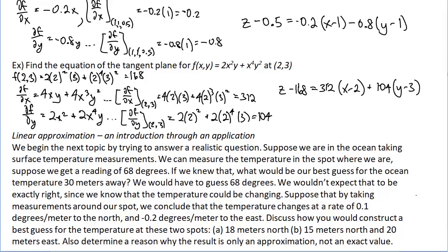Suppose by taking measurements around our spot you determine that temperature is changing at a rate of 0.1 degrees per meter in the north direction and negative 0.2 degrees per meter to the east. We'll construct the best guess for the temperature at two spots: first, 18 meters north; second, 15 meters north and 20 meters east. We'll also discuss why these should only be approximations.